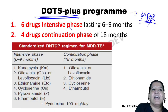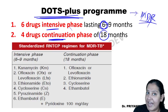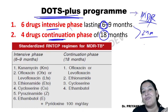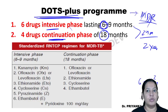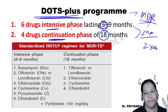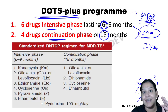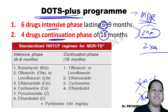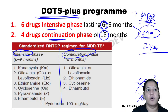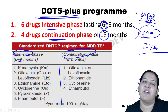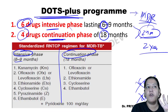Under DOTS+, treatment lasts 24 months: 6 months intensive phase plus 18 months continuation phase. In the 6-month intensive phase, six drugs are given: capreomycin/kanamycin, ofloxacin, ethionamide, cycloserine, pyrazinamide, and ethambutol. H and R are not given because they are ineffective in MDR. Z and E from first-line are retained; the other four are second-line drugs.